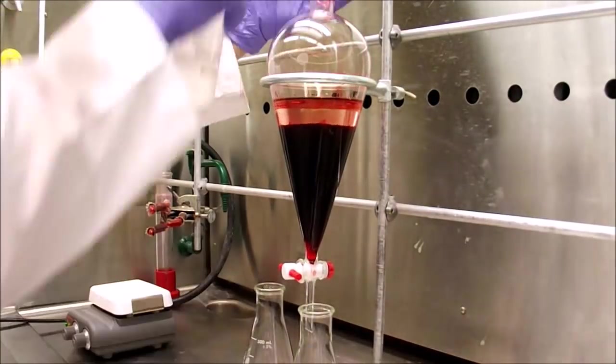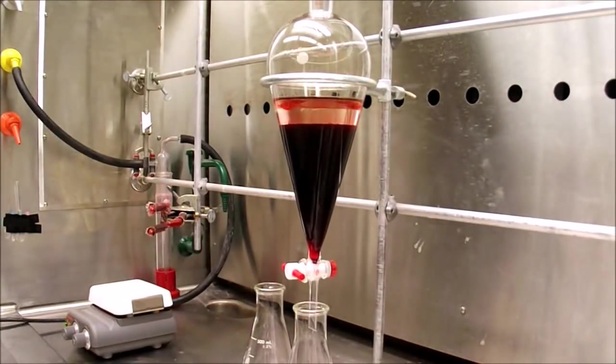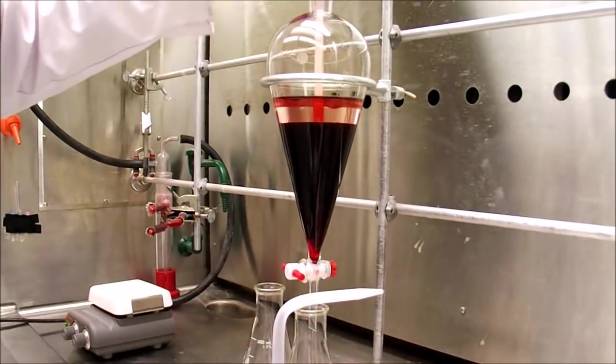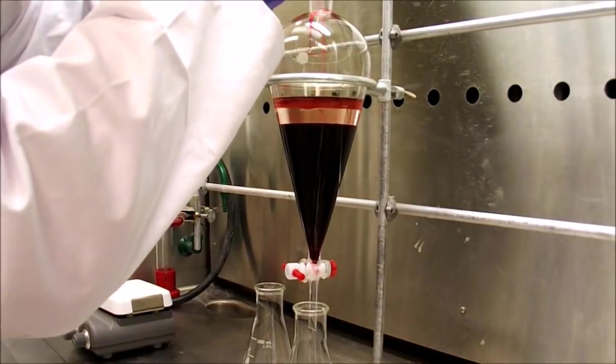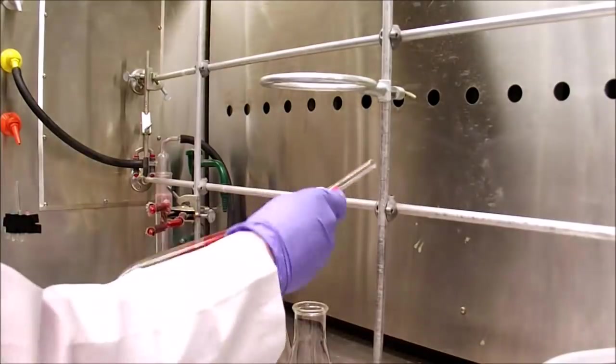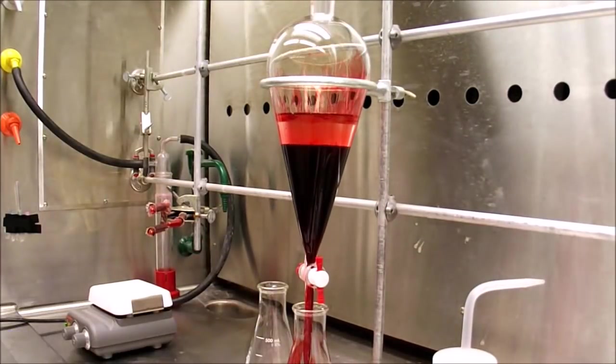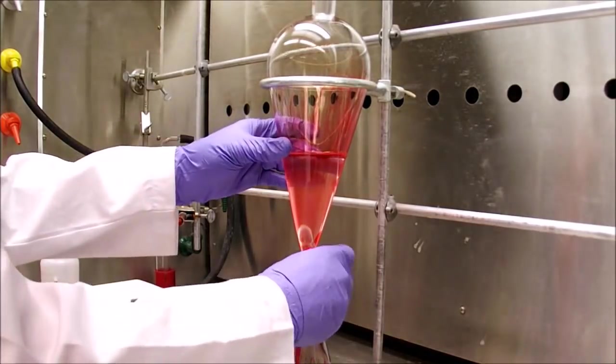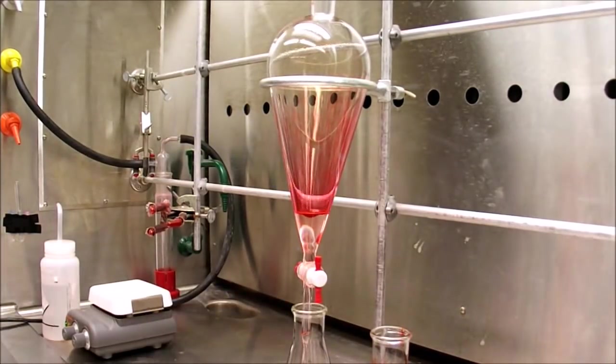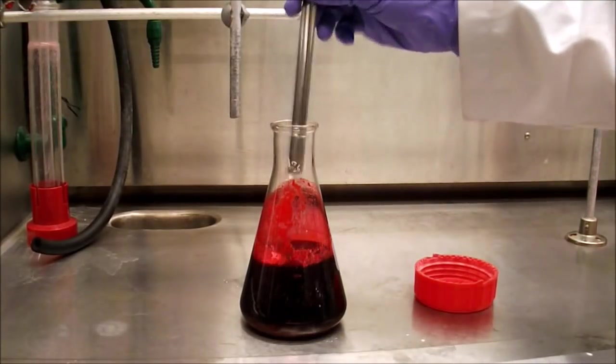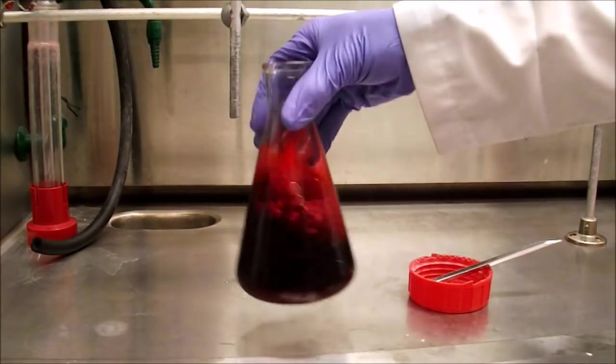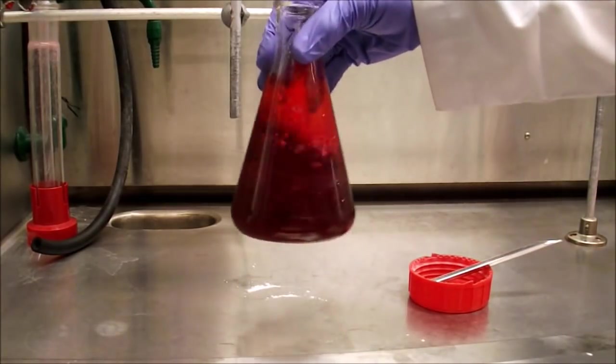For the sake of time, repeat washings are not shown. The organic phase is then dried using brine and then magnesium sulfate to remove residual water. When the mixture is fully dry, some portion of the magnesium sulfate will remain suspended as small particles instead of clumping together. Here, that is visible as a lightening of the solution color.